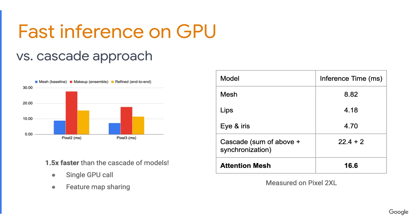As a result, Attention Mesh works in super real-time on mobile devices and is more than 50% faster than the baseline cascade approach, which consists of the face mesh model followed by several region models — all sharing the same architecture as corresponding Attention Mesh submodels for fair comparison.